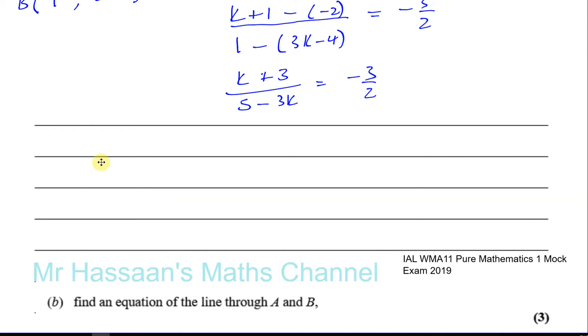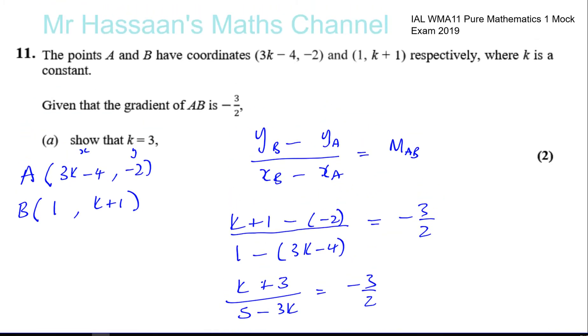Okay, so what we can do is continue here by cross multiplication. So we're going to have 2 times k + 3 is equal to -3 times 5 - 3k. So we have 2k + 6 is equal to -15 + 9k. So we can bring the k's together. You've got 6 + 15 is 21, and 9 - 2k is 7k. So that gives us a nice answer. k equals 3. k equals 3, and that's the value of k for which the gradient is -3/2.